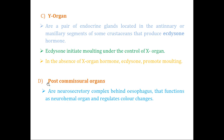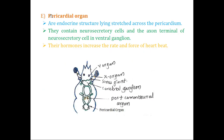The post-commissural organ — 'post' meaning after the commissure, which connects the two ganglia — is a neurosecretory complex located behind the esophagus, above the heart region. It functions as a neurohemal organ and regulates color change. As seen across most crustacean neuroendocrine organs, chromogenic regulation — the regulation of color changes — is a common function worth keeping in mind.